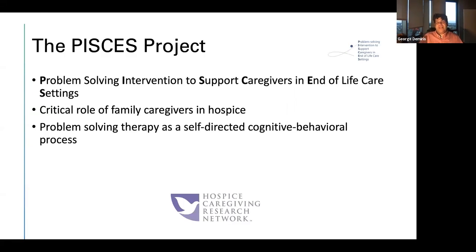The first project I'm presenting is the PIASIS project, which is a problem-solving therapy intervention that has been designed to be delivered to family caregivers of patients at the end of life. We are recruiting caregivers who are informal or unpaid caregivers — family members or trusted others of patients at the end of life who are in hospice with a prognosis of six months to live or less. Caregivers in that situation face a lot of stressful barriers and oftentimes feel isolated and have difficulty coping with the challenging situation.